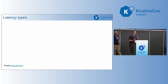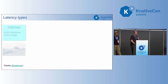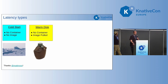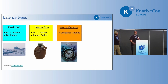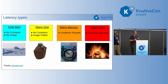There are different kinds of latency types — really just different scenarios on a particular node. Two main variables: one, is the container running on that node? Two, has the image been cached on that node? A cold start is when the image is not cached and the container is not running — that takes the longest. A warm disk scenario is when the image has been cached but the container is not running. A warm memory scenario is when the container has been paused. And a warm CPU scenario is when the container is actively running and can serve requests immediately.